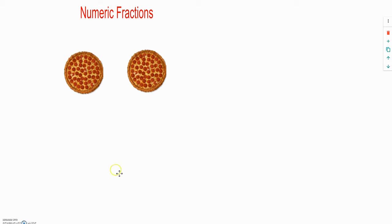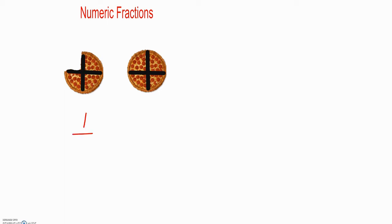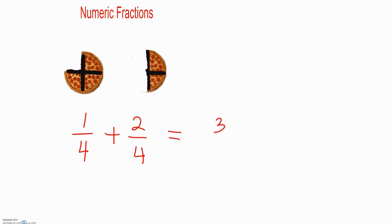Let's look at these two pizzas. I divided these two pizzas into four equal parts. Then I ate one portion of the first pizza, so that's one quarter. For the second pizza, I ate two parts of it, so that's two quarters. Altogether I ate three quarters of these two pizzas.